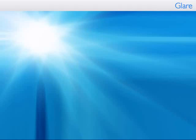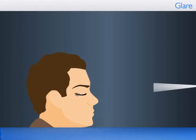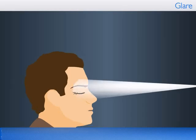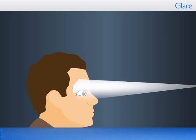In this nugget, we will study the concept of glare. Glare is the negative sensation produced by luminance in the visual field that is so much greater than the luminance to which the eyes are adapted that they cause discomfort, reduced visibility, or both.